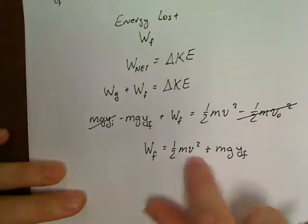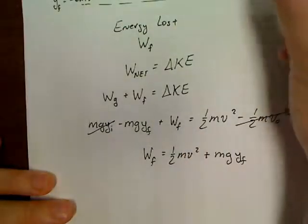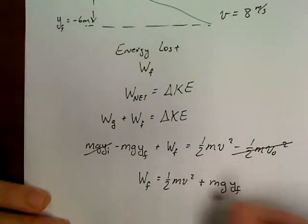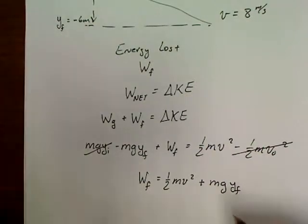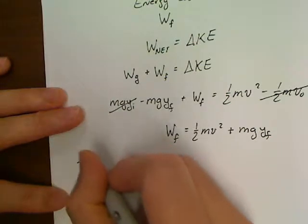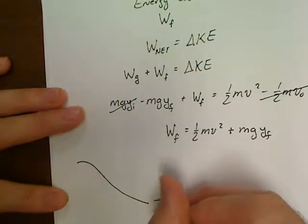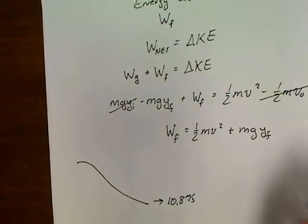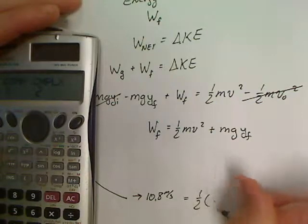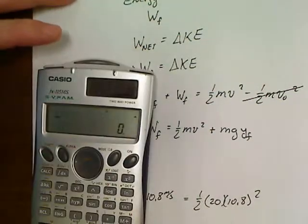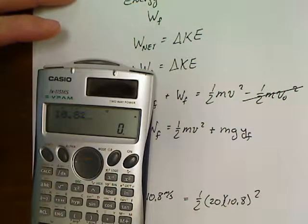Here's also the common-sense approach: first find the kinetic energy at 10.8 m/s — one-half times 20 times 10.8 squared. Half of 20 is 10, and 10.8 squared is 116.64, so 10 times 116.64 gives 1166.4 joules. Then find the kinetic energy at eight meters per second — one-half times 20 times 8 squared.